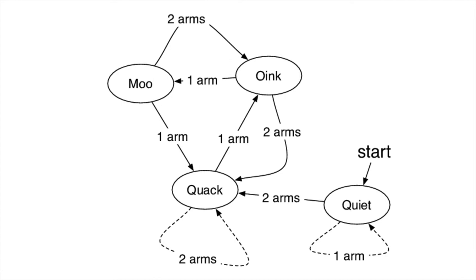Now what if I put one arm up after the quacking state? What sound would you make? Oink — correct. So we're going to keep the oinking going. And now what happens if I put one arm up again? Moo, moo, moo — right, we'd start making mooing sounds. And if I put two arms up again, we'd be back in our oinking state. And two arms again — we're back in our quacking state.